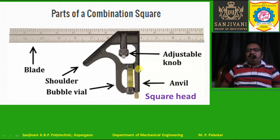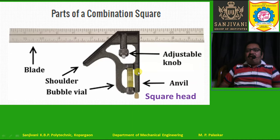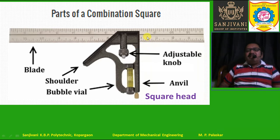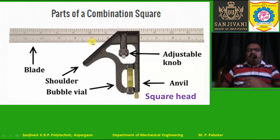A bubble vial is also provided so that measurement of plumb is possible. The anvil is the surface which is 90 degrees inclined to the blade when the blade is inserted in the slot of the square head. The shoulder is inclined at 45 degrees to the blade, and a bubble vial is also provided.